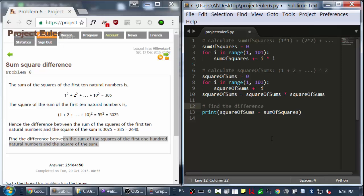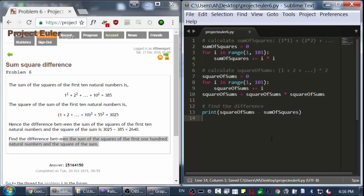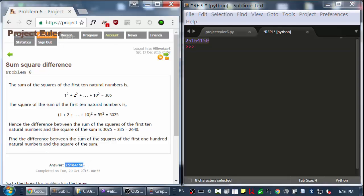And then finally we'll find the difference. Now if I go ahead and run this, this is a really fast program to run, it calculates this number 25,164,150, which is the same as the answer. Let's go ahead and run this with the other. Here we go.